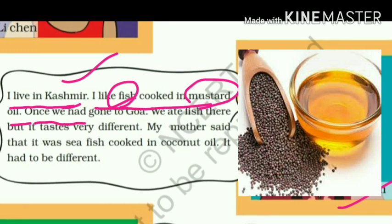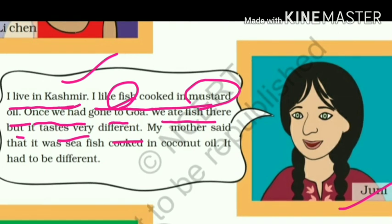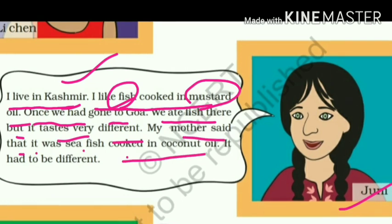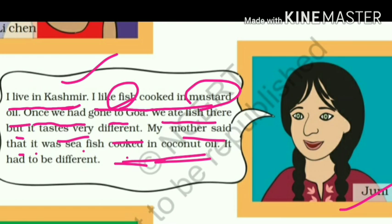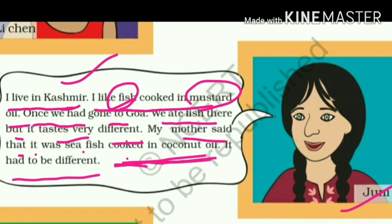Once they had gone to Goa and ate fish there, but it tasted very different. Ek baar hum log Goa gaye the aur wahaan pe machhli khaai — lekin uska jo taste tha, bahut different tha. Her mother said it was sea fish cooked in coconut oil. Kashmir mein mustard oil mein bani thi, aur Goa mein coconut oil mein — is wajah se dono ka taste different hai.